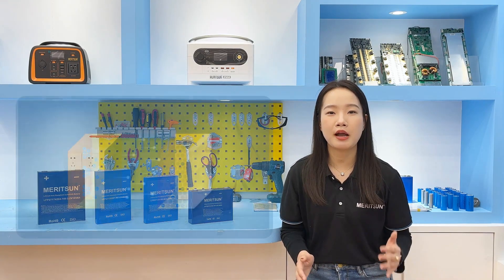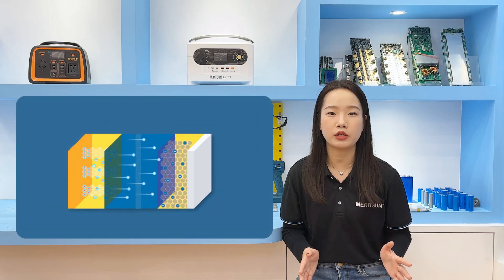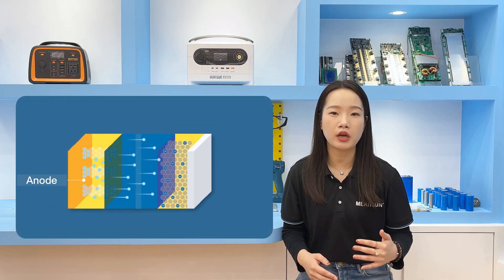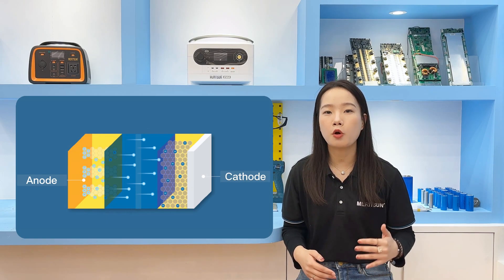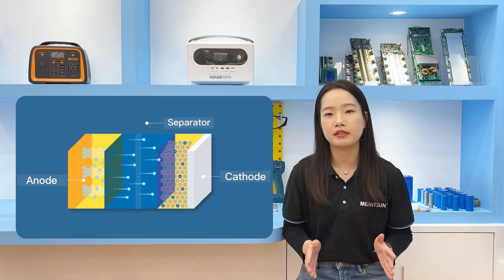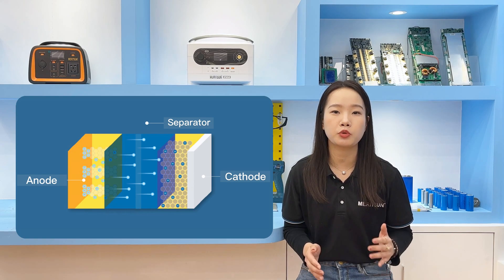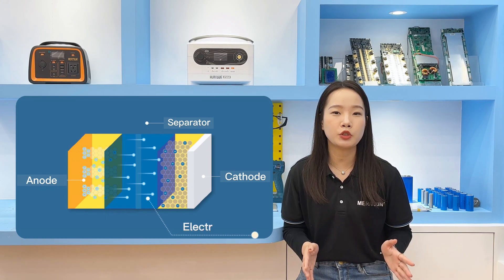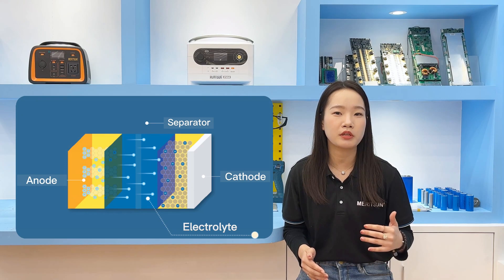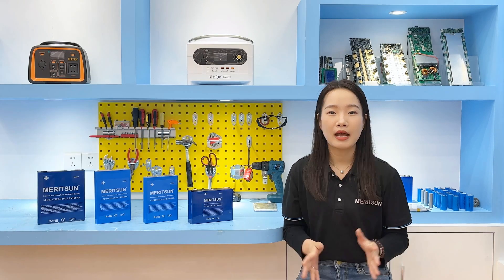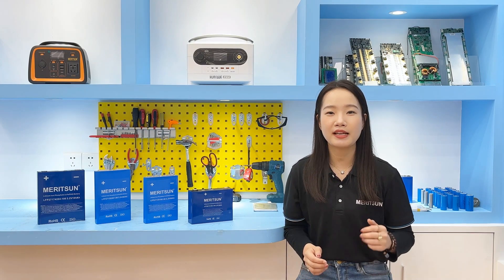LiFePO4 battery cells have four main components: one anode that holds the lithium ions when charged, one cathode that holds the lithium ions when discharged, a separator placed between the electrodes to prevent contact and shorting, and an electrolyte medium that enables the movement of lithium ions between the electrodes. Let's use the prismatic cell as an example to introduce in detail.